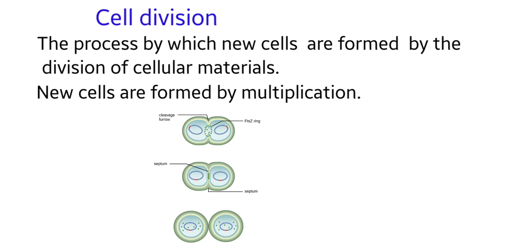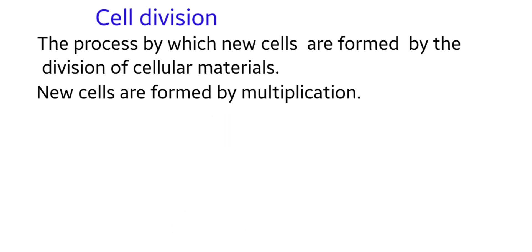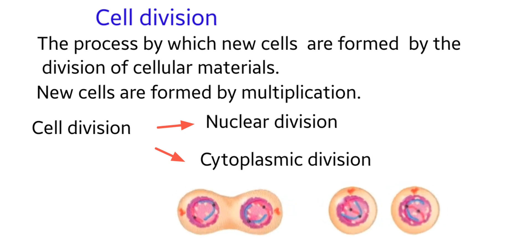The process of cell division in eukaryotes is composed of a nuclear division and a cytoplasmic division.